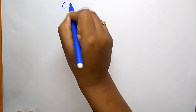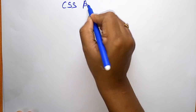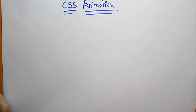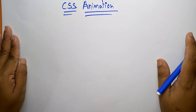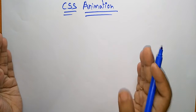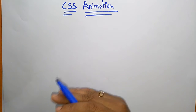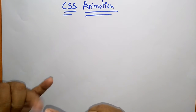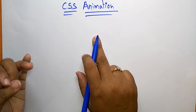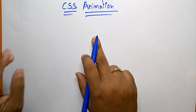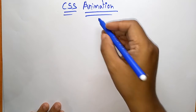Hi students, welcome back. Coming to the next topic, that is CSS animation. So far we have seen the different cascading style sheet properties and how those properties are affecting elements. Now let's see the animation. CSS animation allows animation to most HTML elements without using JavaScript or Flash. Before CSS, you could apply animation with the help of JavaScript or Flash, but CSS animation is also one way of creating animation to HTML elements without using JavaScript or Flash.